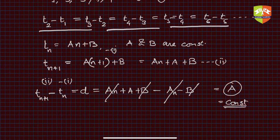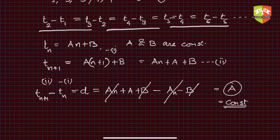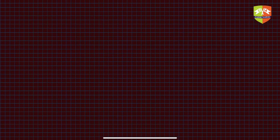Such sequences will be called arithmetic progressions. Always keep in mind: any sequence of numbers where the difference between two consecutive terms is constant will be called an AP. I hope you understood this part.